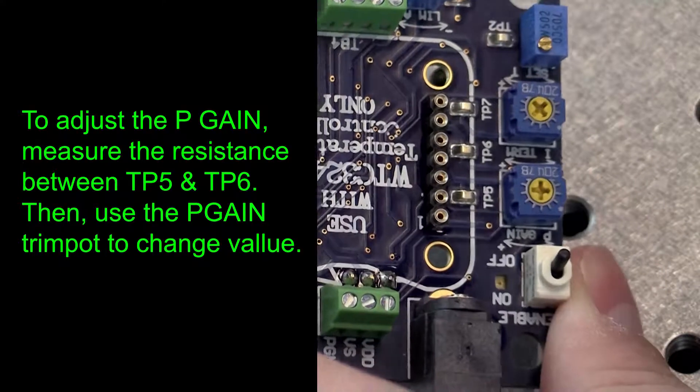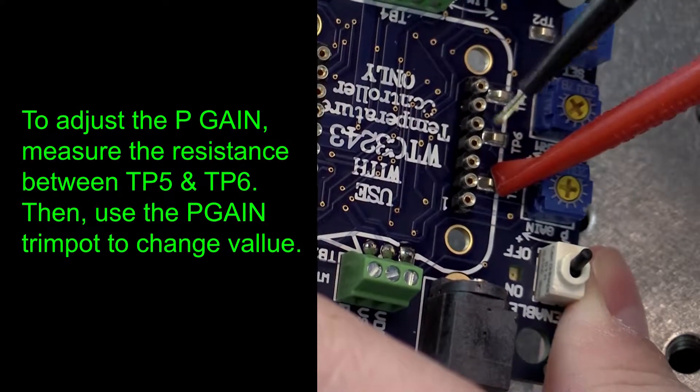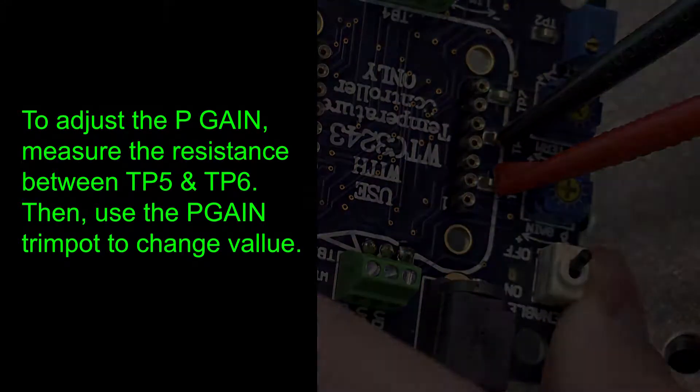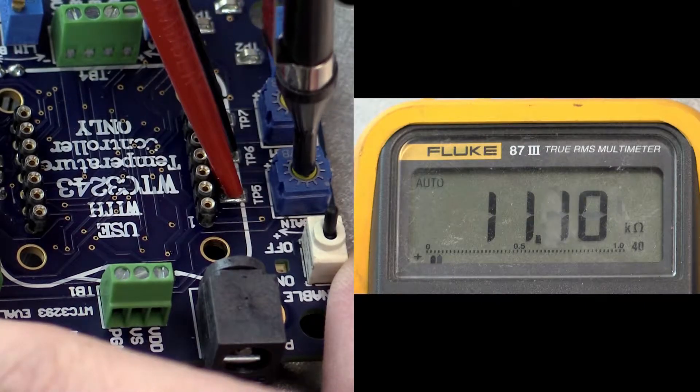To adjust the P-gain, use an ohmmeter to measure the resistance between test points TP5 and TP6. Adjust the P-gain trim pot to the calculated resistance.